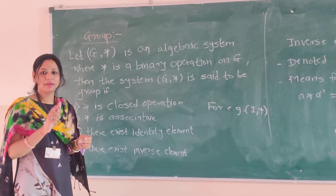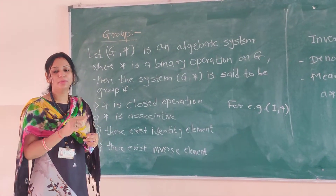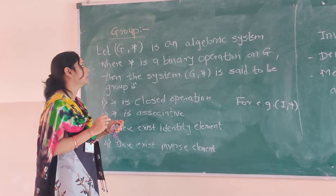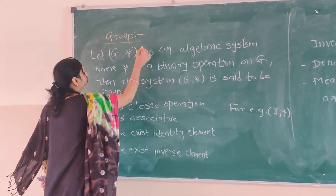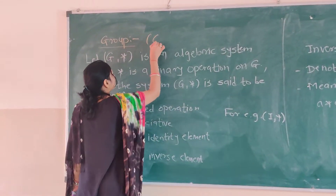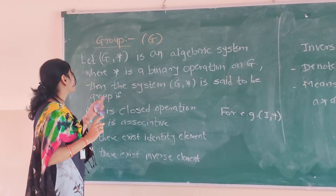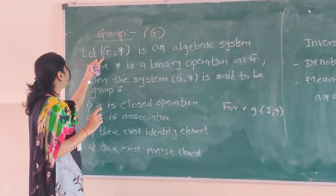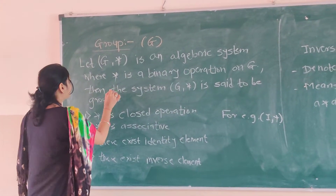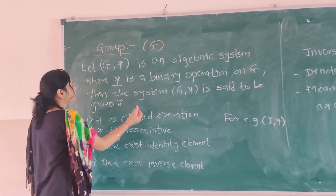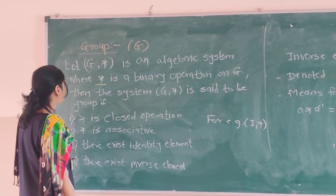Group is also an algebraic system which satisfies the properties of binary operation, and it is always denoted by G. Let G★ be an algebraic system where star is a binary operation on G.